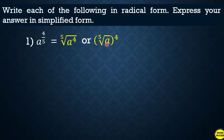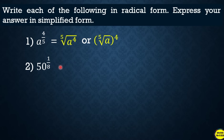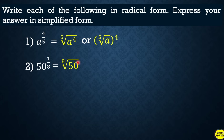Another example: 50 raised to 1 over 8. The index is 8, so this becomes the 8th root of 50. There is no exponent written because when no exponent is visible, it is understood to be 1, so we don't need to write it.